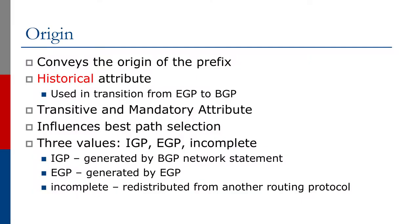We're now going to look at the origin attribute, and this one conveys the origin of the prefix. It may not be quite what you think though. This origin was actually used in the transition from EGP to BGP, so it would tell BGP whether the prefix originated from the old EGP protocol that predated BGP or from BGP itself. It's a transitive attribute and it's mandatory, and it actually influences the best path selection as well, as we'll see later on.